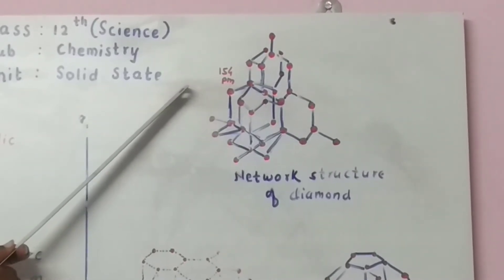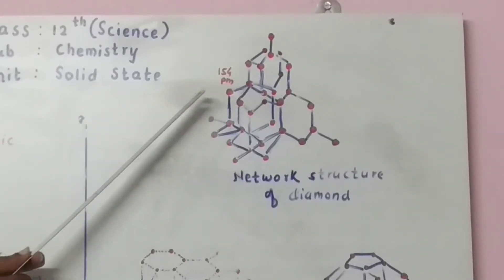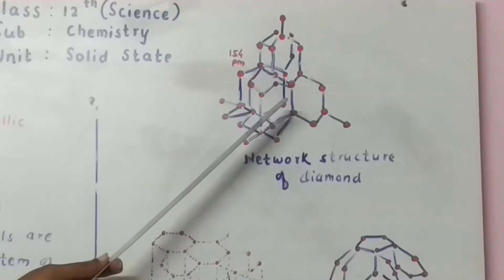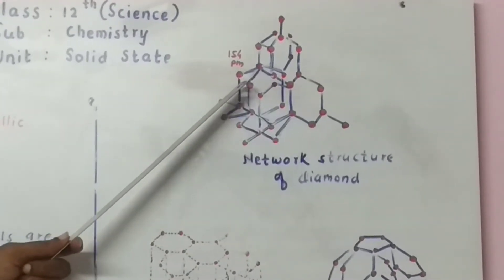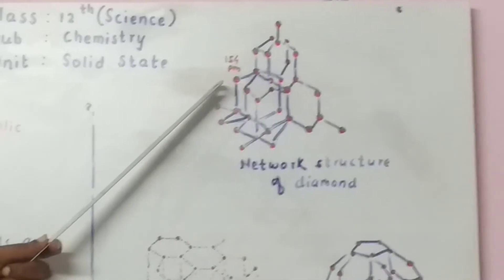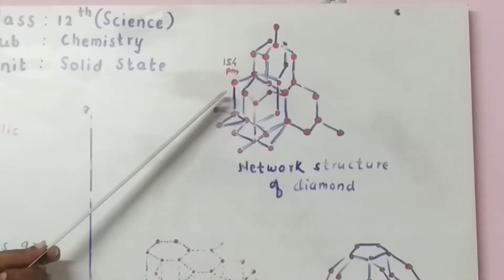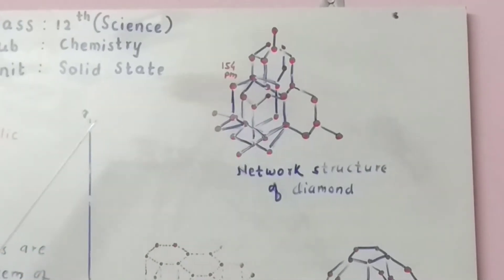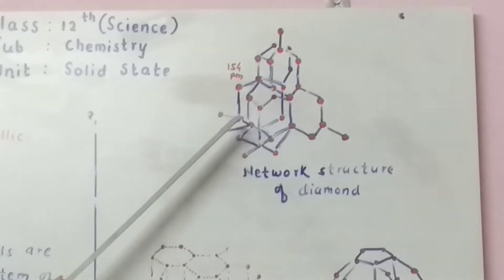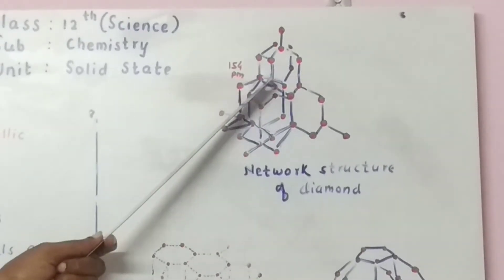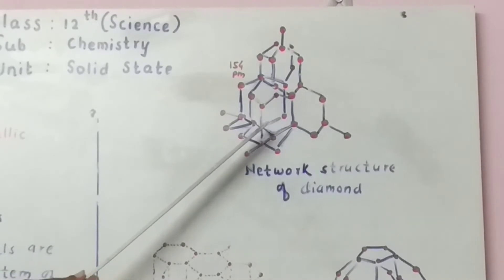To form a continuous structure of covalent bonds to give a giant three-dimensional structure. Here continuous network of carbon atoms is shown in this diagram.